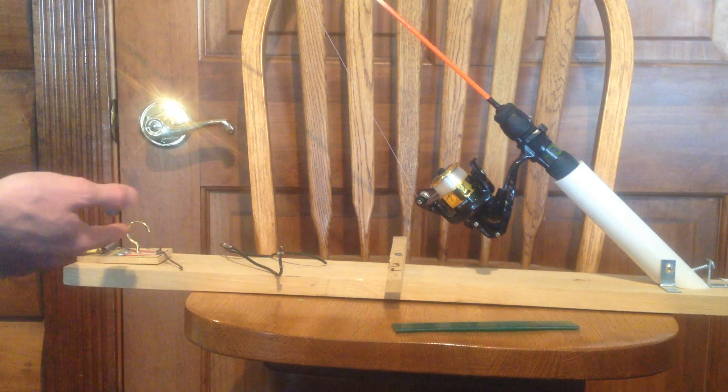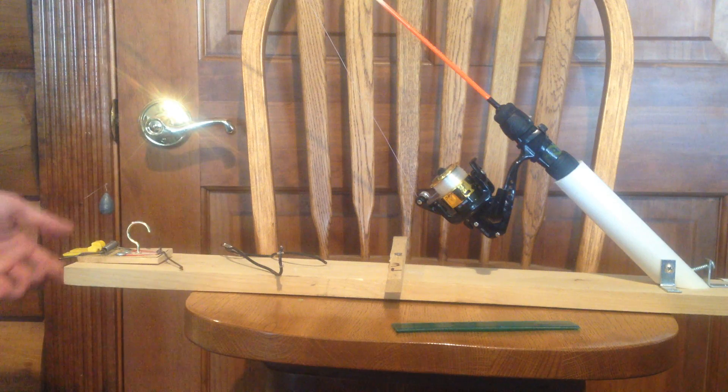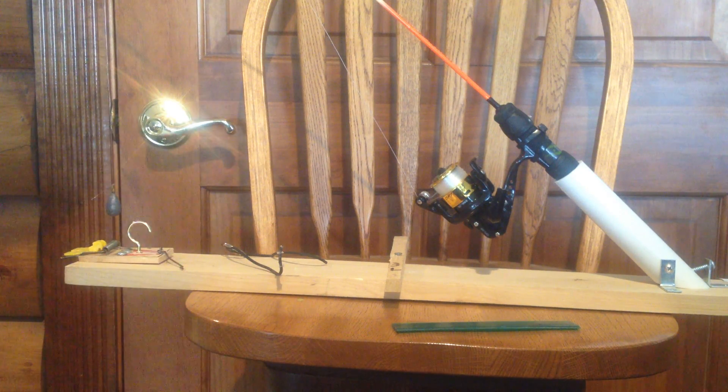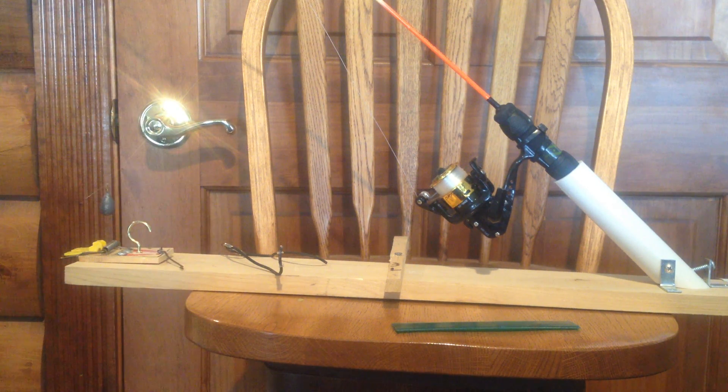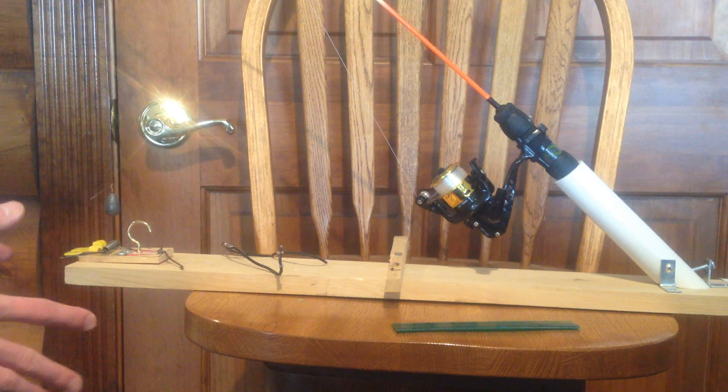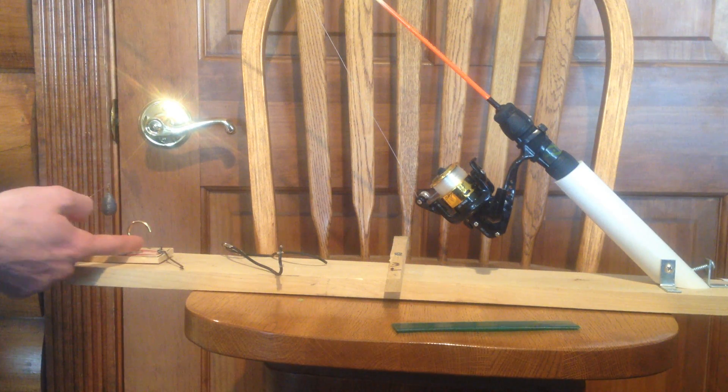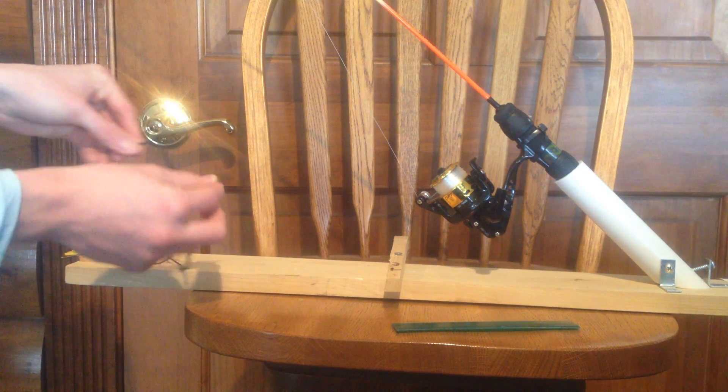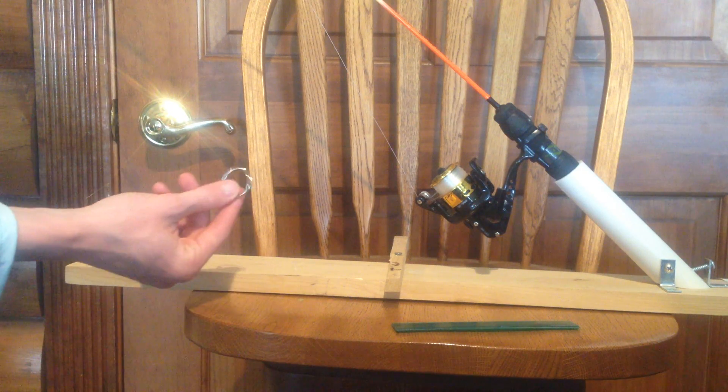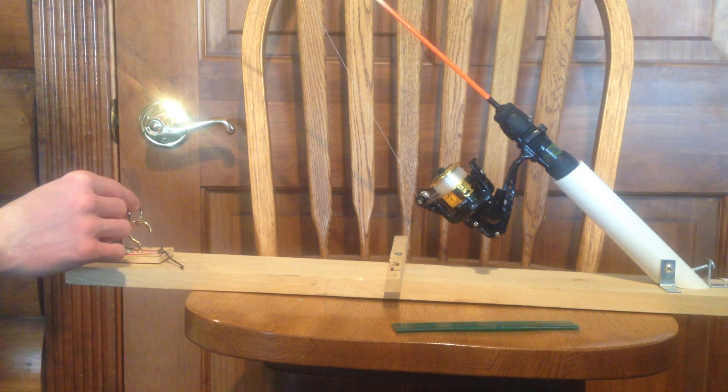Then over here, this isn't really needed, it's just a mousetrap to help secure it. This was from one of my other homemade automatic fisherman attempts. But what's important about this is you have to have this metal thing right here that can hold onto this keychain ring, like this. That's important.